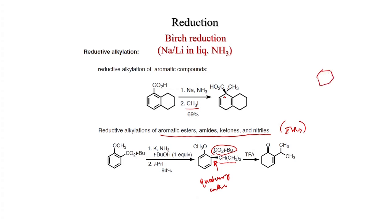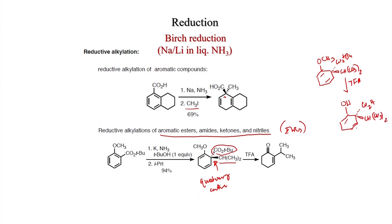After treatment with trifluoroacetic acid (TFA), the compound undergoes: conversion to the enol, decarboxylation to give a carbonyl compound, and then isomerization to give the conjugated enone. Thus, an alpha,beta-unsaturated enone can be generated by reacting the ester with potassium in ammonia and tert-butanol, then treating with 2-iodopropene.